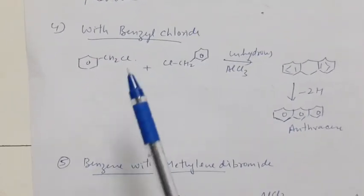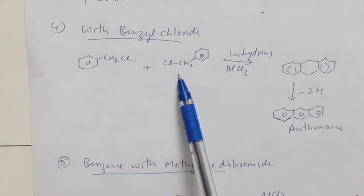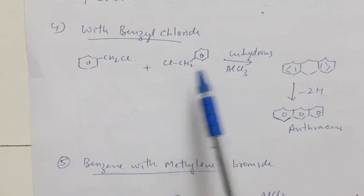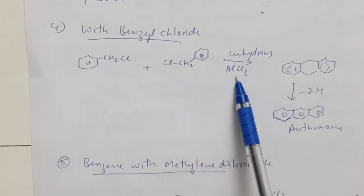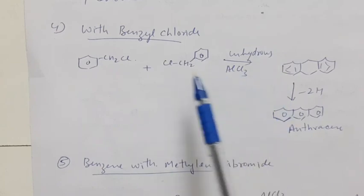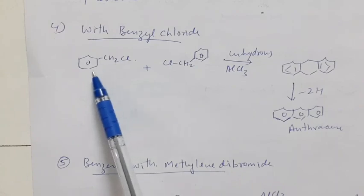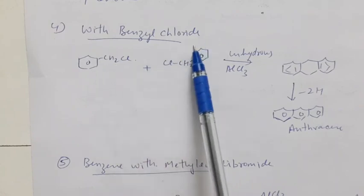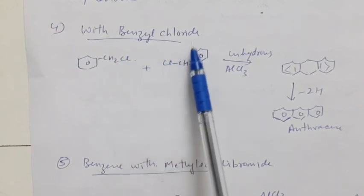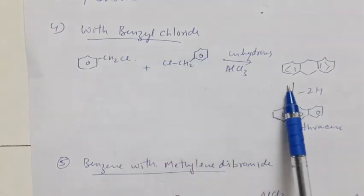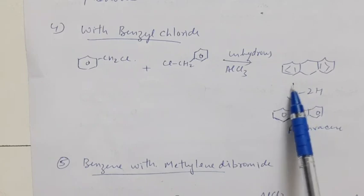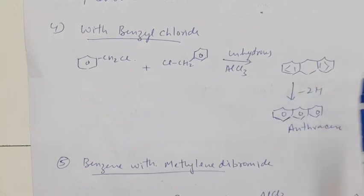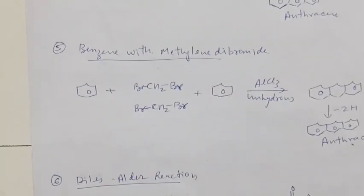In another reaction, 2 molecules of benzoyl chloride react in the presence of anhydrous aluminum chloride, eliminating 2 molecules of HCl to give dihydroanthracene, which on oxidation and dehydrogenation gives anthracene.